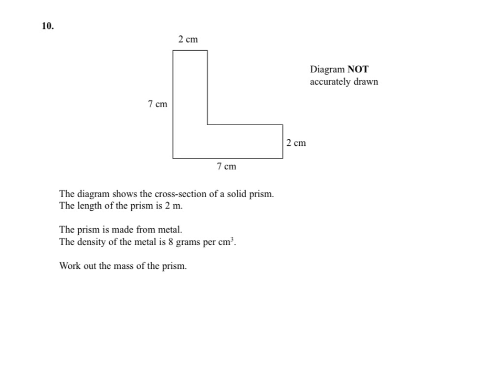The diagram shows the cross-section of a solid prism, and the length of the prism is 2 meters. All the dimensions of the cross-section are given in centimeters, so we need to change 2 meters into centimeters, which is 200 centimeters.